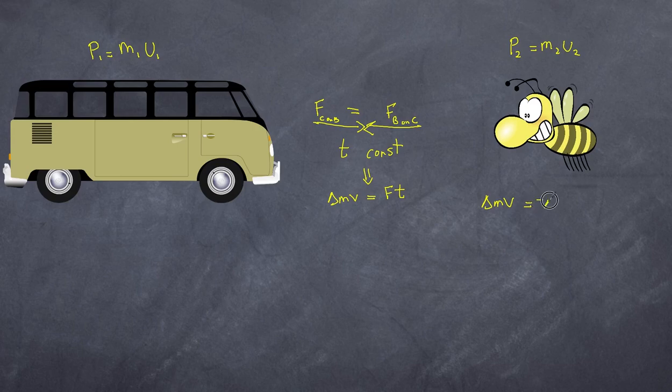Now it's negative because the force is in the opposite direction, whereas the change in momentum for my combi van is going to be equal to just simply positive delta mv. Now why is that? Because of the fact that the forces are in opposite directions, so the magnitude is exactly the same.